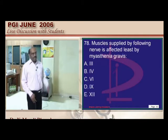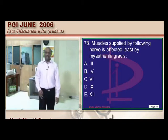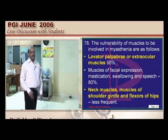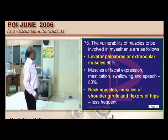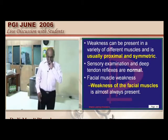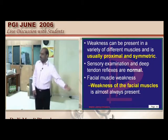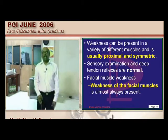Myasthenia gravis commonly involves extraocular muscles first, causing diplopia and ptosis. Then facial expression, mastication, swallowing, and speech are affected, followed by neck muscles and shoulder muscles. Key examination points: is weakness proximal or distal, symmetrical or not, deep tendon reflexes status, and whether the pupil is affected.